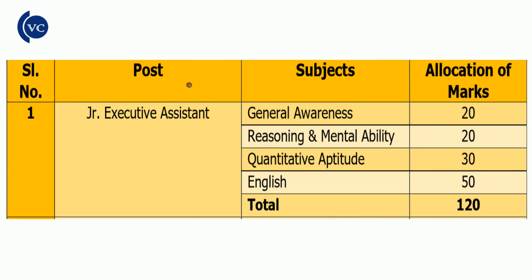We will discuss the syllabus. The exam is for 20 marks, which means 20 questions for General Knowledge. Reasoning and mental abilities are 20 marks, quantitative aptitude is 30 marks, and English is 50 marks. This is a total of 150 marks.